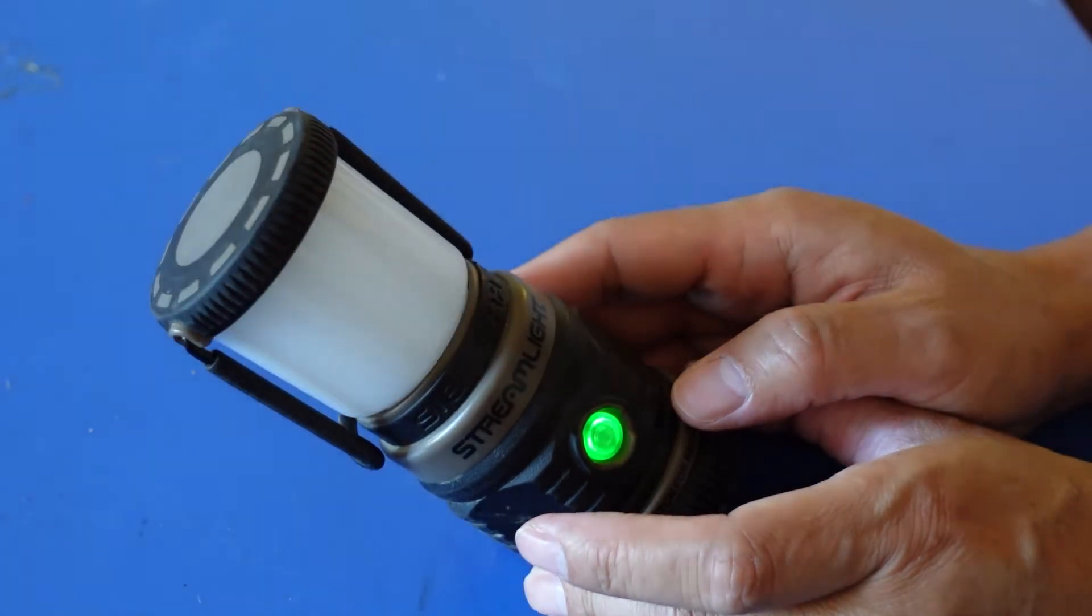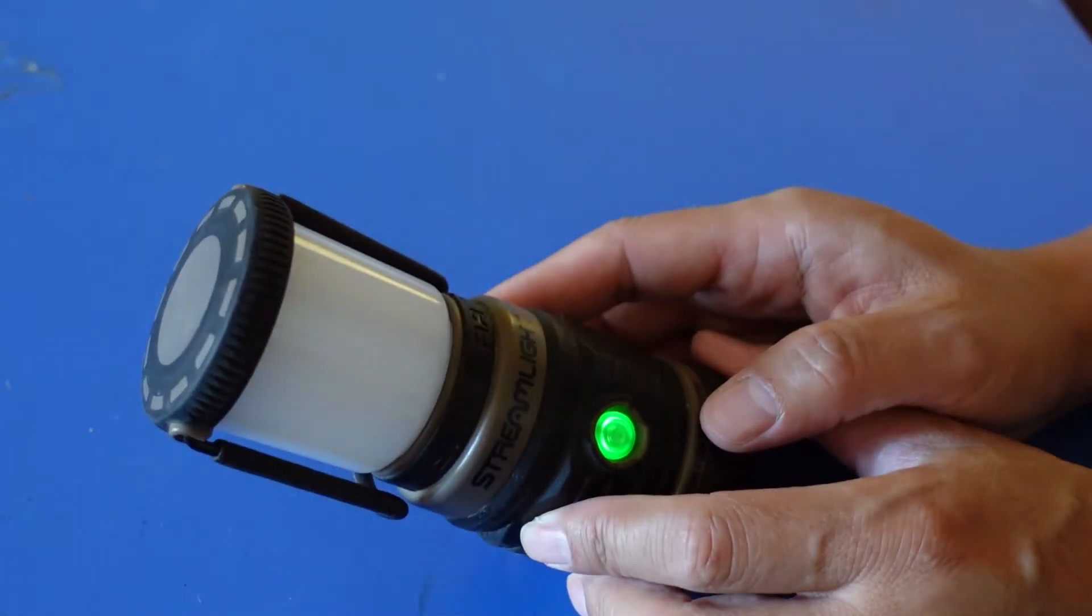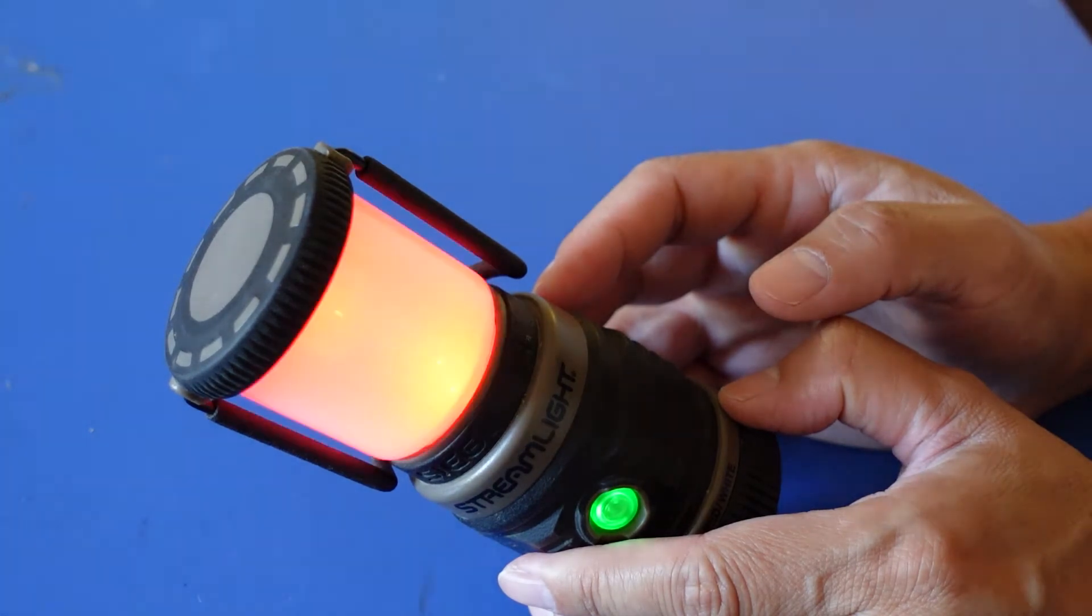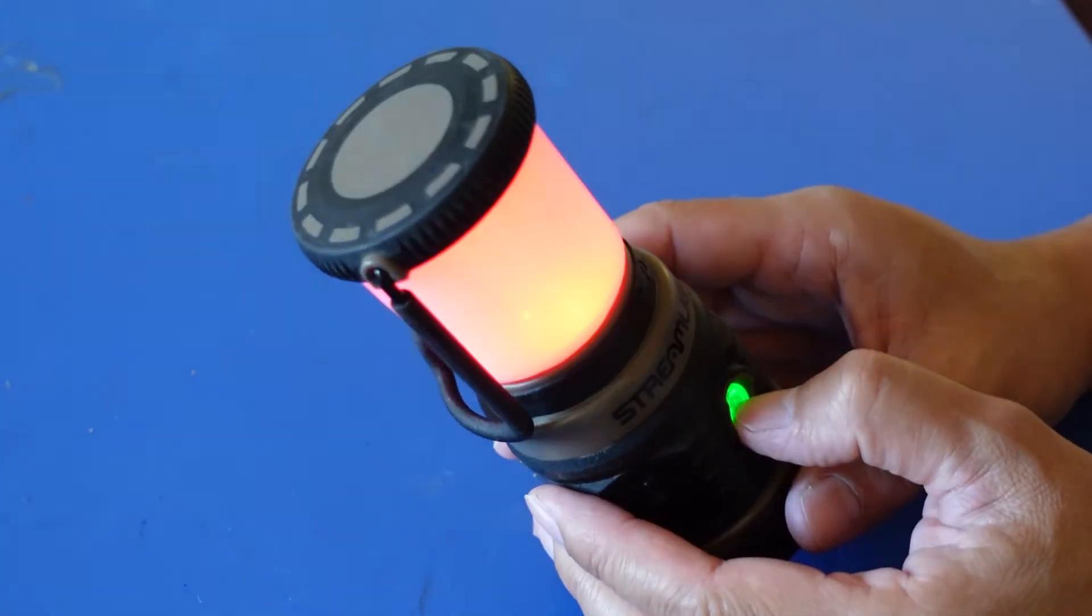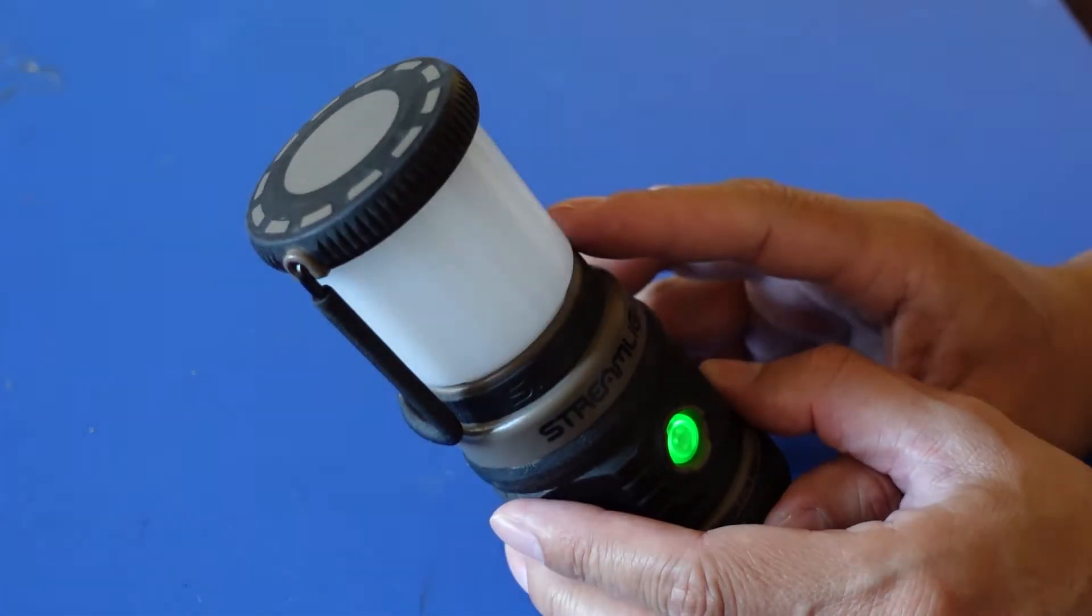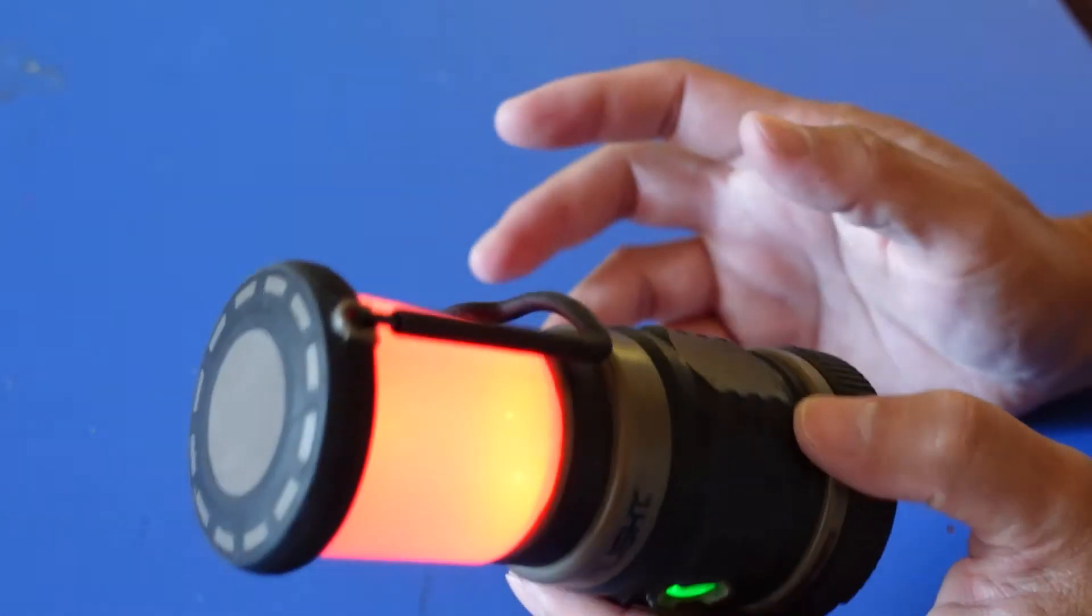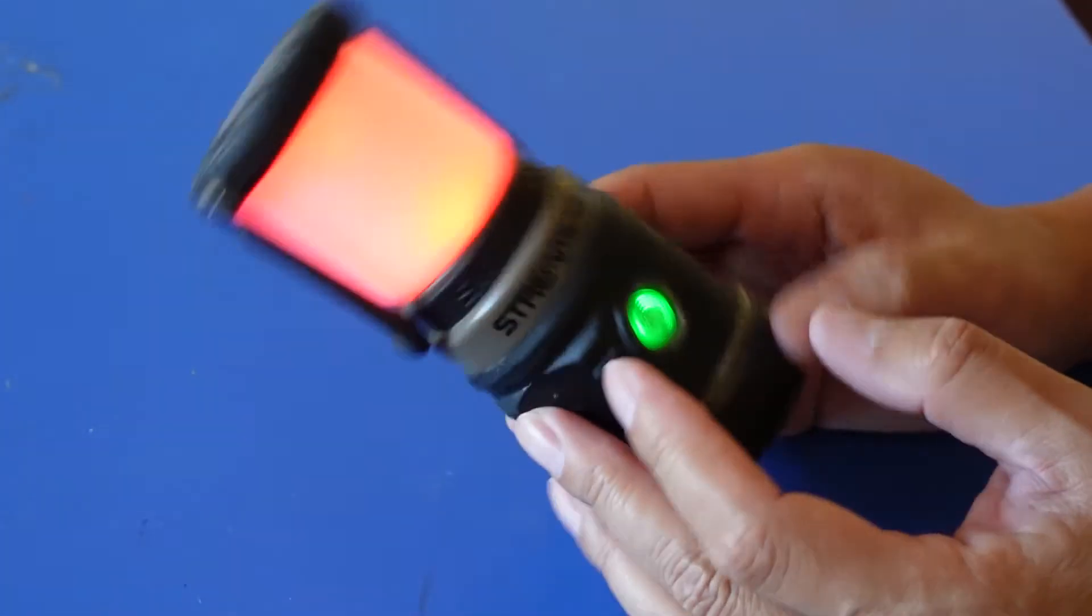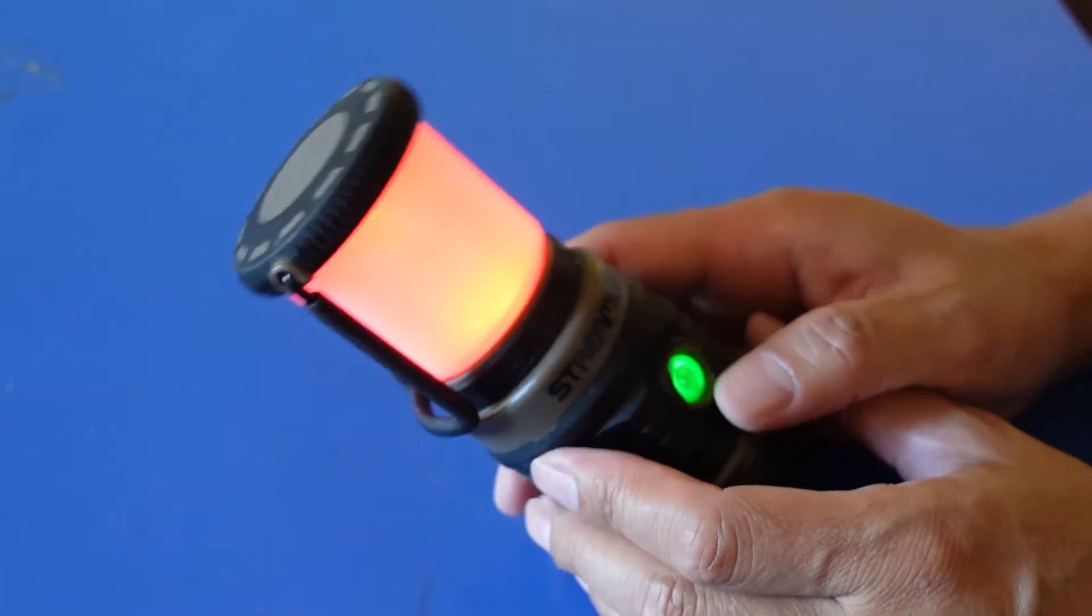Also, you can have SOS emergency flashing beacon. When you have it in the emergency lighting setting, the battery will last for about 200 hours. That's a good couple days. If you need help, you can have it turn on for days, seeking help from the rescue team.